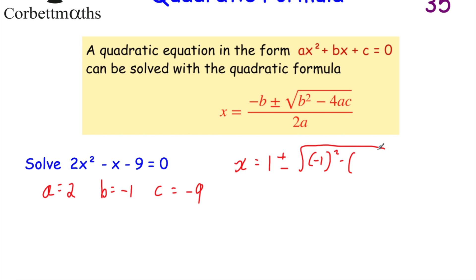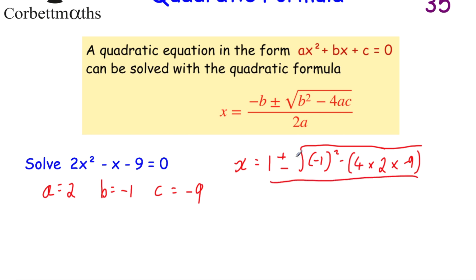...and then we've got the 4ac part. I like to put this all in brackets: 4 multiplied by a, which is 2, multiplied by c, which is negative 9. I put that whole thing in brackets because of the minus sign — it helps me remember that a minus and a minus gives a positive. And then all divided by 2a. Now a equals 2, so 2a would be 4. So we've got x equals 1 plus or minus the square root of: minus 1 squared minus, in brackets, 4 times 2 times minus 9, close brackets, all divided by 4.